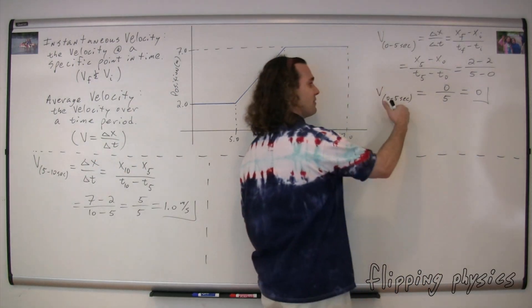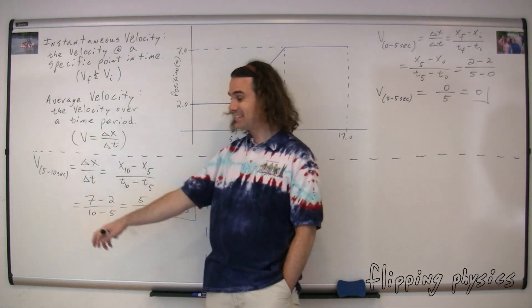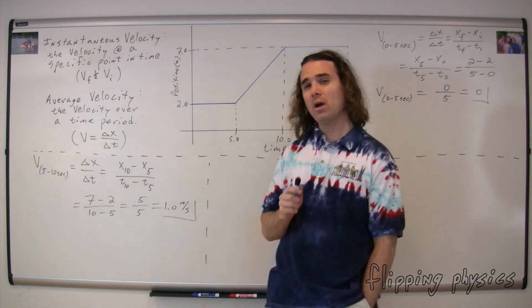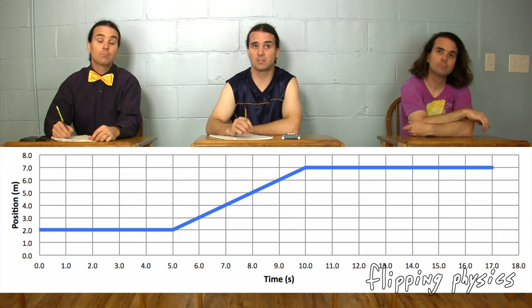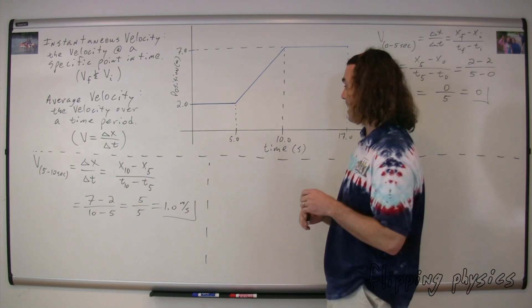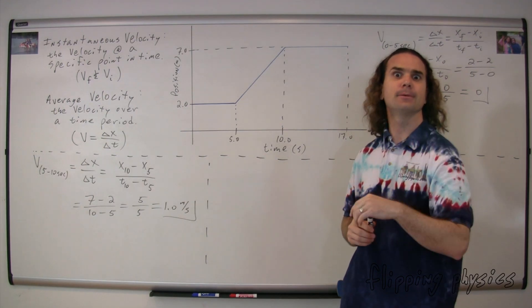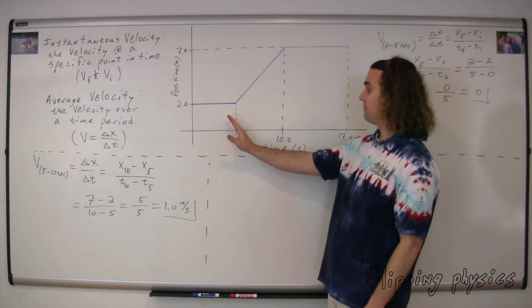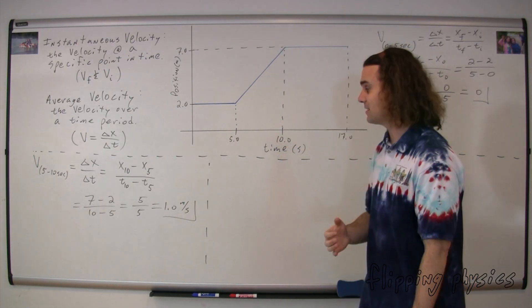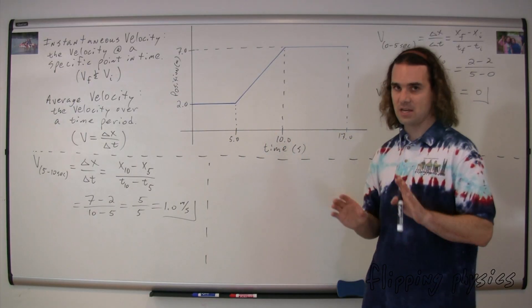So far, we figured out the average velocity from zero to five seconds is zero, and the average velocity from five to ten seconds is 1.0 meters per second. What is the velocity at seven seconds? That would be 1.0 meters per second. Because the slope of a position versus time graph is velocity, and the slope of the line at seven seconds is 1.0 meters per second. Is the velocity of 1.0 meters per second at seven seconds an instantaneous or an average velocity? Instantaneous velocity, because it's at the specific time of seven seconds. What is the instantaneous velocity at nine seconds? Also 1.0 meters per second. And what is the instantaneous velocity at 6.9723416 seconds? Still 1.0 meters per second.